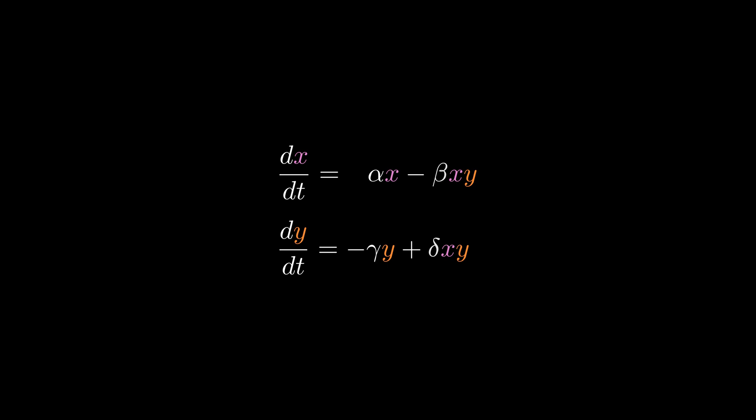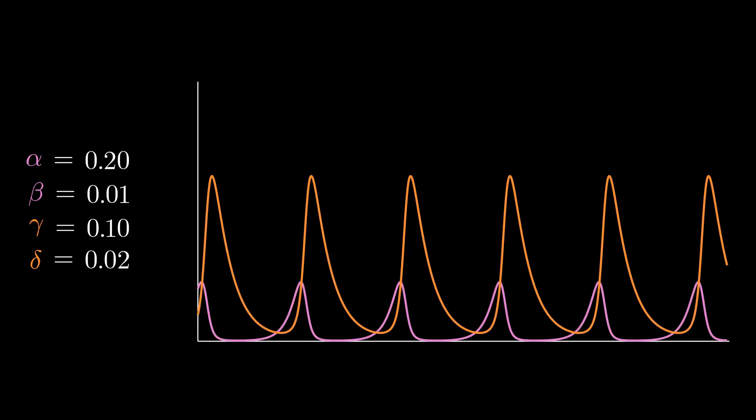When we integrate the system of differential equations with given parameters and initial populations we can see that it strictly has oscillatory behavior. It will always be periodic no matter what parameters we choose.